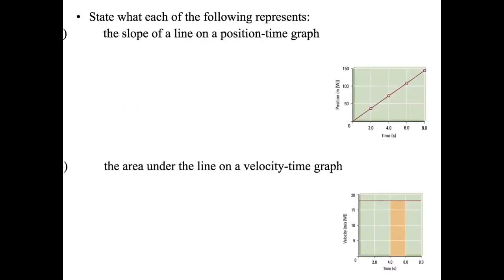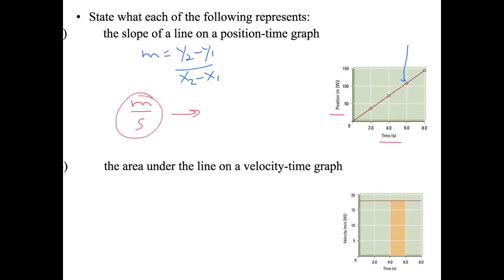What does the slope of a line on a position-time graph represent? The slope is rise over run, or (y2 minus y1) over (x2 minus x1). The rise is position — for instance, in meters — and the run is time, in seconds. So the units are meters per second, which represents velocity.